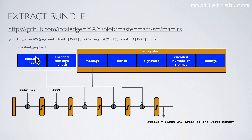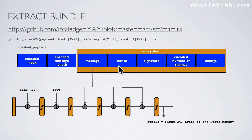This is our mask payload. In the restricted mode, the side key is absorbed and the transformation function is applied. Next, the root is absorbed and the transformation function is applied. Next, the encoded index and the encoded message length are absorbed and the transformation function is applied. Next, the mask message is absorbed and the transformation function is applied. Next, the mask nonce is absorbed and the transformation function is applied. After the transformation function is applied, we take the first 243 trites of the state memory — this value is the bundle.